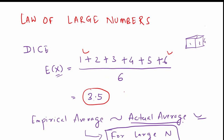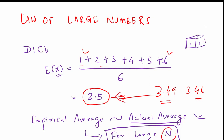Now, if you conduct this experiment over and over again — let's say 100 times — you will see that the empirical average, by doing it 100 times, is actually coming out very close to the theoretical average. We found this expected value of 3.5 without even doing the experiment once. But if we actually conduct the experiment 100, 1,000, or even 10,000 times and take the average, the empirical average will converge to the actual average — something like 3.49 or 3.46. The bigger n is, the more accurate the result will be.